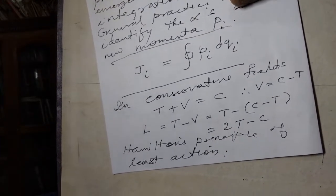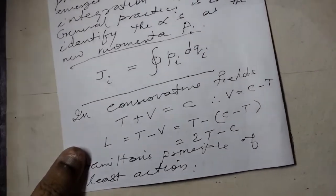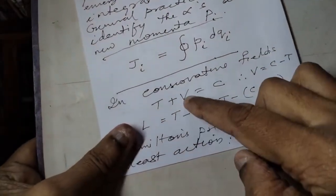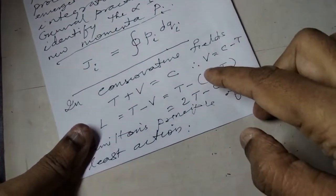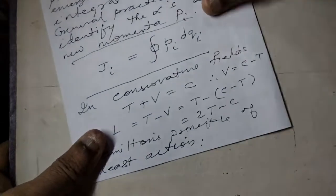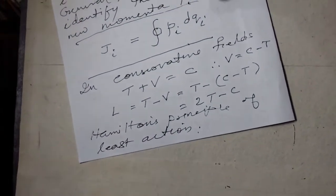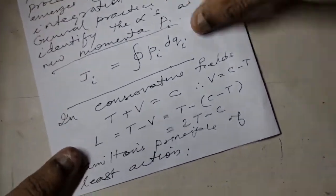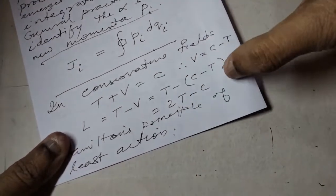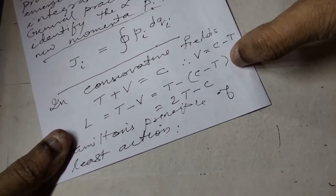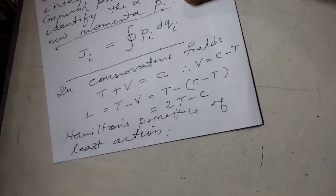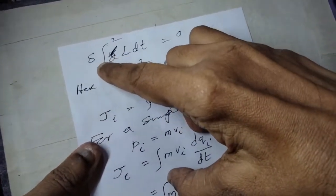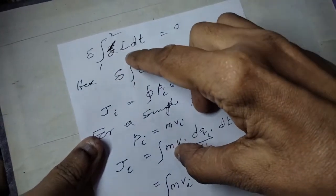This is called a Conservative System. Kinetic energy is constant. T plus V equals C. This is constant. V equals C minus T. Lagrangian L equals T minus V, and V equals 2T minus C. Hamilton's Principle of Least Action: V equals C — the change of the action integral.